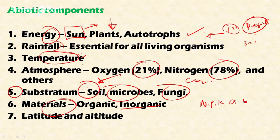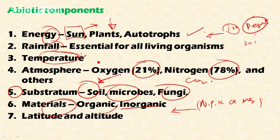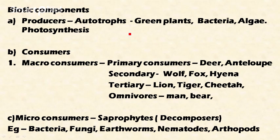Other components of substratum include inorganic materials like nitrogen, phosphorus, potassium, calcium, magnesium, and sulfur — these are macronutrients essential for plant growth. Organic materials like humus are also essential. Latitude and altitude are also important components that influence the ecosystem greatly, as we learn in geography.